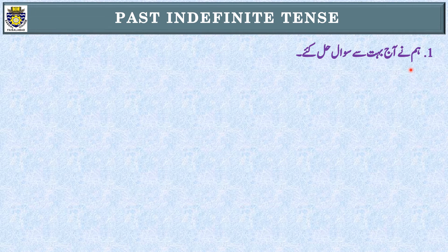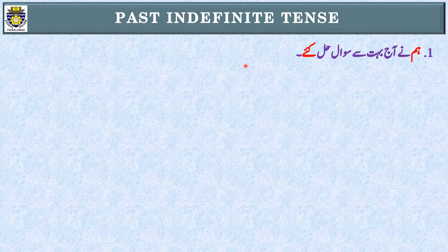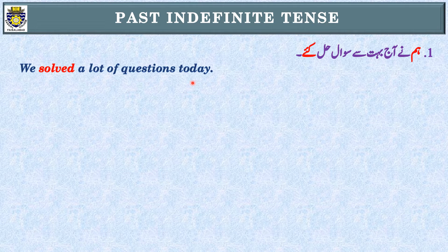Sentence number one: 'We have solved many questions today.' First step: identification of tense — this is past indefinite tense. Second step: the subject is 'We.' So the translation is: 'We solved many questions today.'